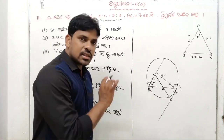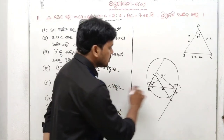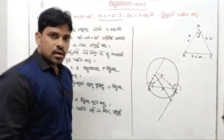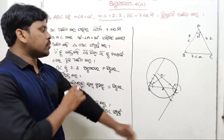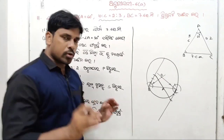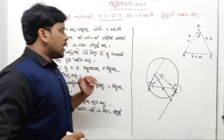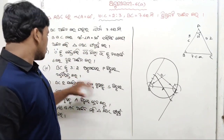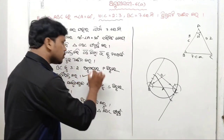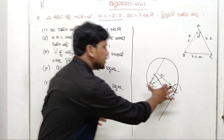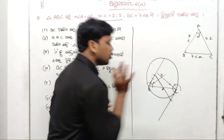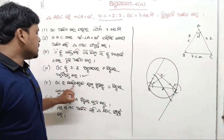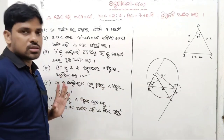If you want to know that P is equal to 3 is equal to 2, then you can divide it. If you want to know how to do this, you can see that BC is equal to 3 and 2. Next, BC is equal to S.